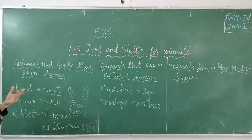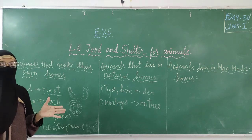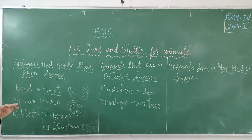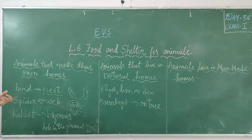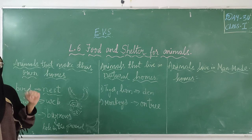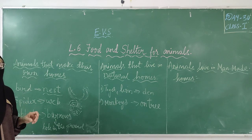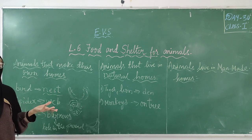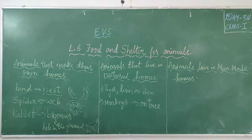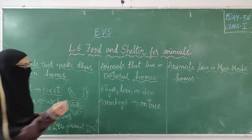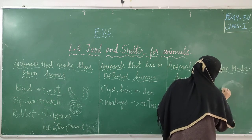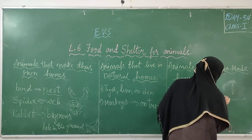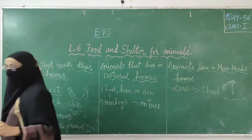If you are having a bird like a parrot, you will make a cage so that it lives in that cage. If you are having a dog, you will construct a house for the dog to live in, because it also needs shelter from heat, cold, rain, and enemies. Cows live in a shed. This shed is made by man.